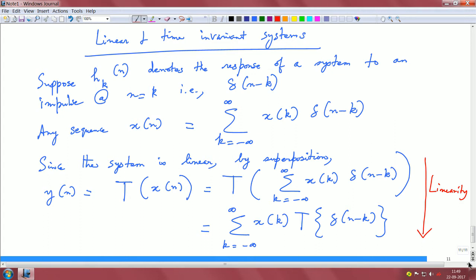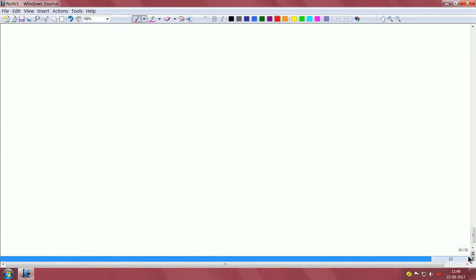Now we can simplify this further. We can say this is summation k equals minus infinity to plus infinity x(k), and we said the response of this system to an impulse at time n equals k is h_k(n), and we just replaced it in this form.